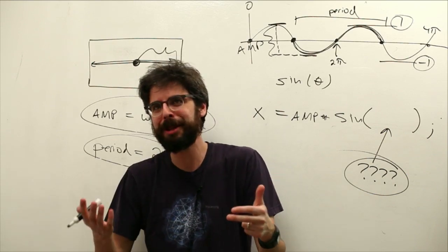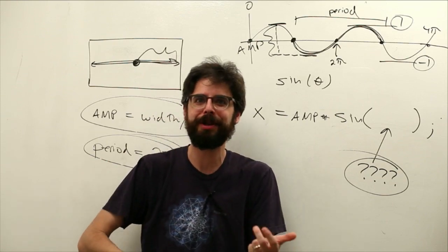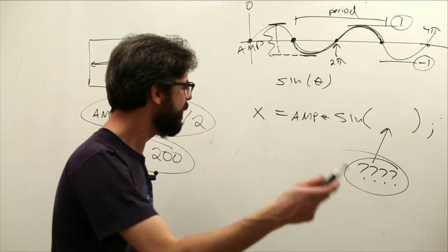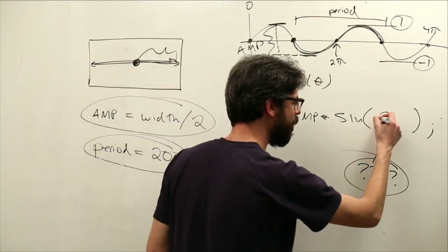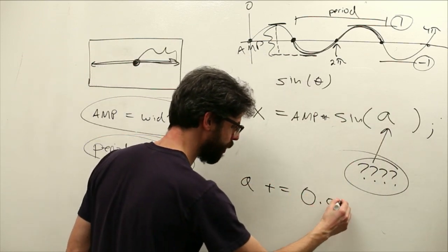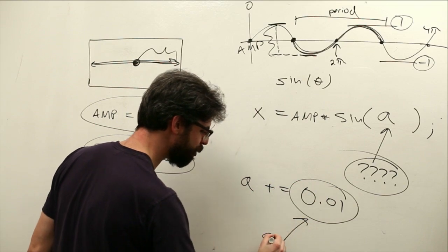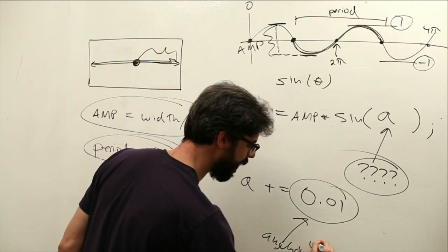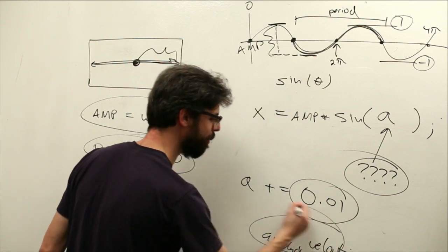Frame count is zero and then you divide by the period and then frame count is one and then you divide by the period and then frame count is two and you divide by the period. It would be much simpler if we just made up a variable called a or theta and said a plus equal 0.0 run. And what is that? That's really angular velocity.